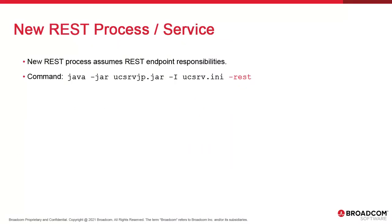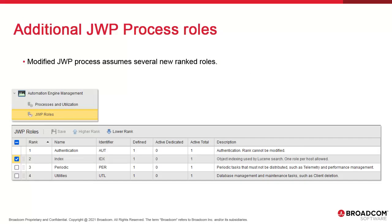The evolution of JCP meant we needed a dedicated process for the REST API endpoint, and so we have the REST process initiated with UCSRVJP and the DASH REST extension. JWP assumes new roles, which are set in client zero in AWI. We can rank these roles to assign specific JWPs to queues and balance the load across multiple JWPs. The JWP assumes the AUT role for authentication — it handles TLS-SSL agent authentication, LDAP, and Kerberos.